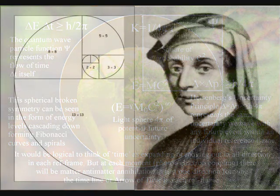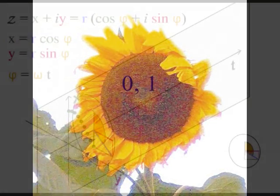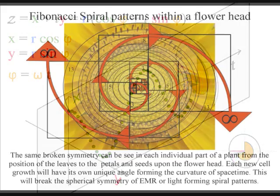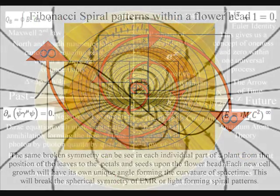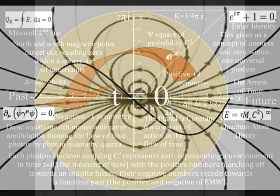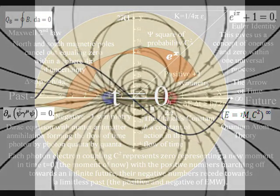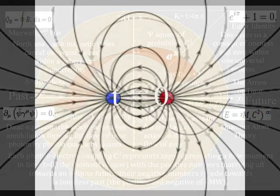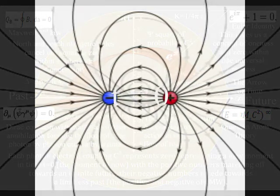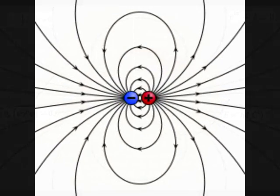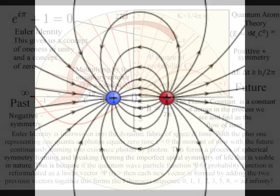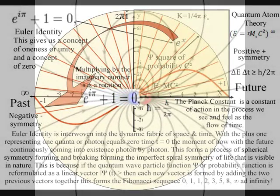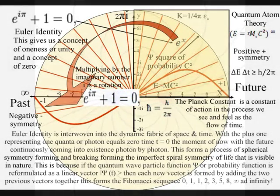In this theory, we have the Fibonacci numbers in nature not because of economy of growth or space, but because time and space is being formed by the geometry, and therefore the mathematics, of this dynamic process. As can be seen on the diagram, we already have zero representing the moment of now, time equals zero, with positive one and minus one representing the positive and negative of electromagnetic waves. Therefore we even have the start of the Fibonacci sequence in the diagram. This is linked to Euler's identity, giving this beautiful equation a place in the structure of space and time. In this theory, the Fibonacci sequence can also be mathematically linked to the fine structure constant 137.